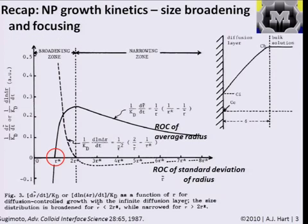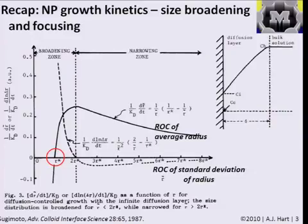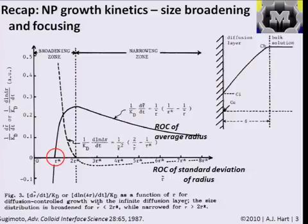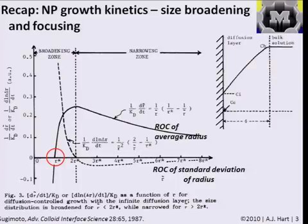Last time we talked about the growth kinetics of nanoparticles and adopted the model from Sujimoto to understand, based on diffusion-limited and reaction-limited growth regimes, whether the size distribution of particles gets broader or focuses. We came down to this plot: if you're in a high-supersaturation situation where the average size is bigger than the critical size, it's mathematically favorable for the size distribution to focus — bigger particles grow slower than smaller ones, so smaller ones catch up. In the opposite situation, the size distribution broadens.